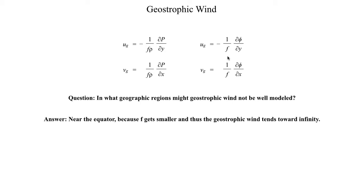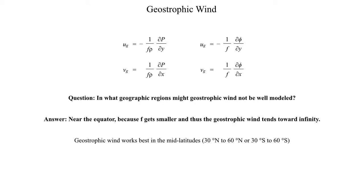Geostrophic wind does work pretty well in the mid-latitudes, usually defined as between about 30 and 60 degrees north in the northern hemisphere, or 30 to 60 degrees south in the southern hemisphere. You can sometimes fudge the boundaries a little — you might get away with using geostrophic wind at, say, 25 degrees north — but keep in mind that as you get closer to the equator, the geostrophic wind might become exaggerated due to the inverse dependency on the Coriolis parameter, giving results that aren't really representative of what's actually going on in the atmosphere.